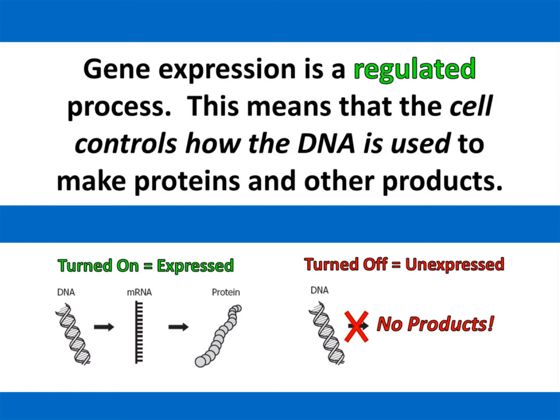Gene expression is a regulated process. This means that the cell controls how the DNA is used to make proteins and other products. If a gene is turned on and being used to make a protein, then we say that that gene is being expressed. But if the gene is turned off and no products are being formed, then that gene is unexpressed.